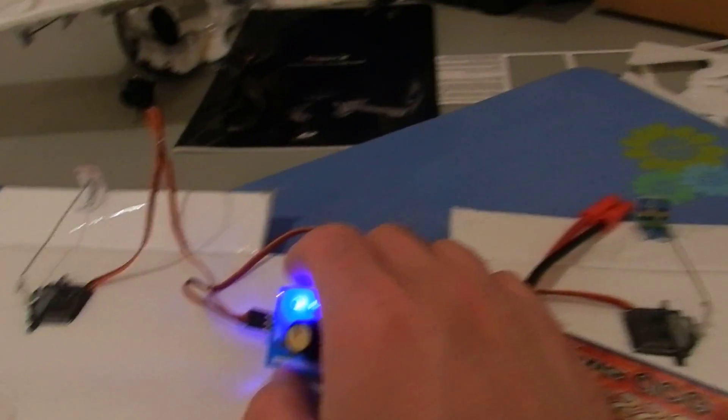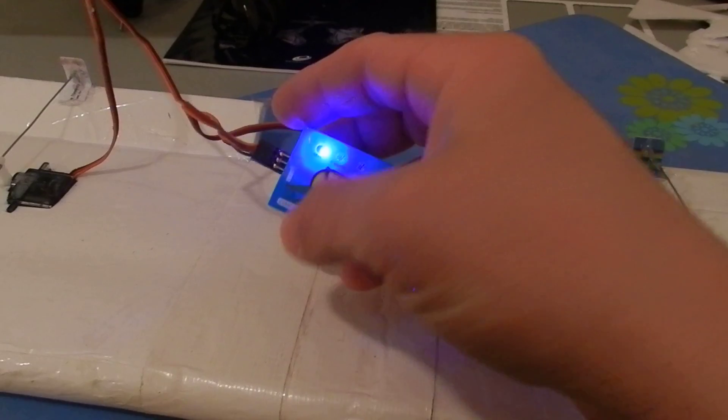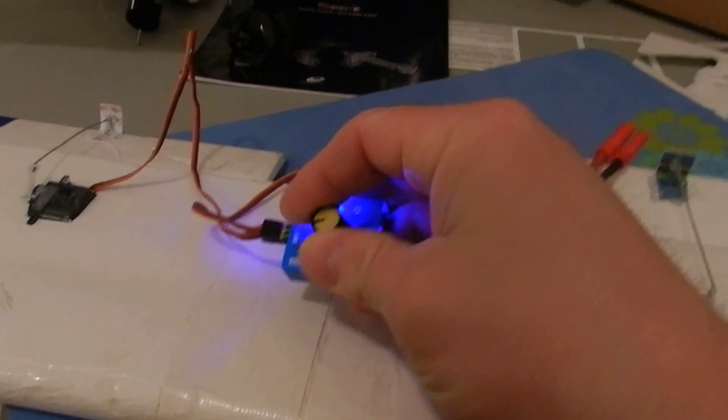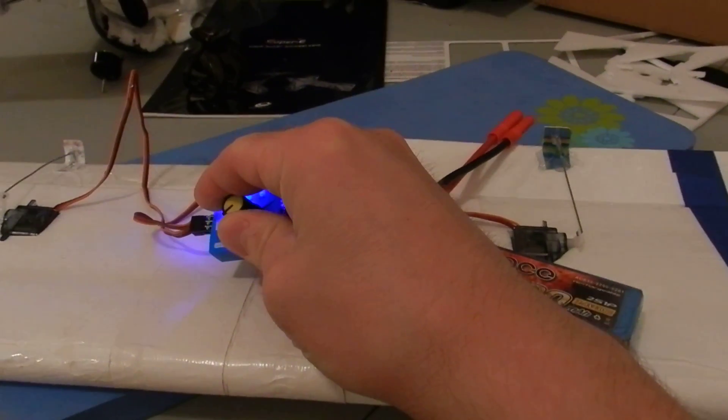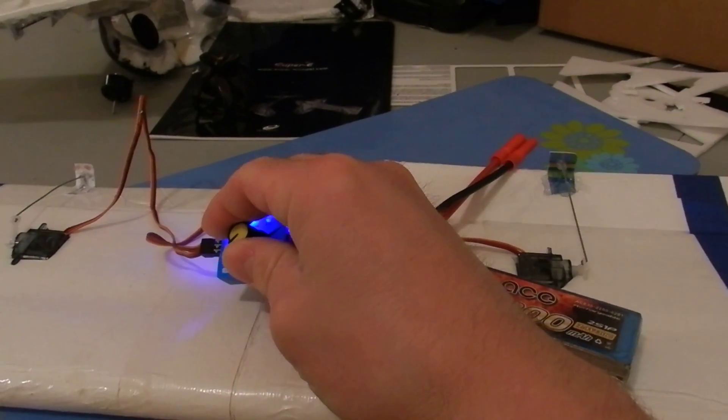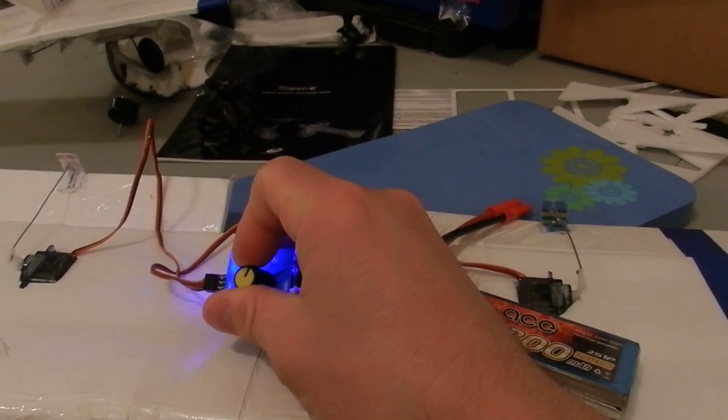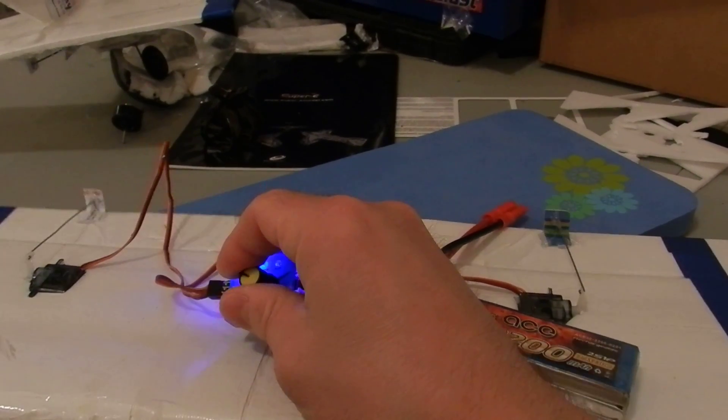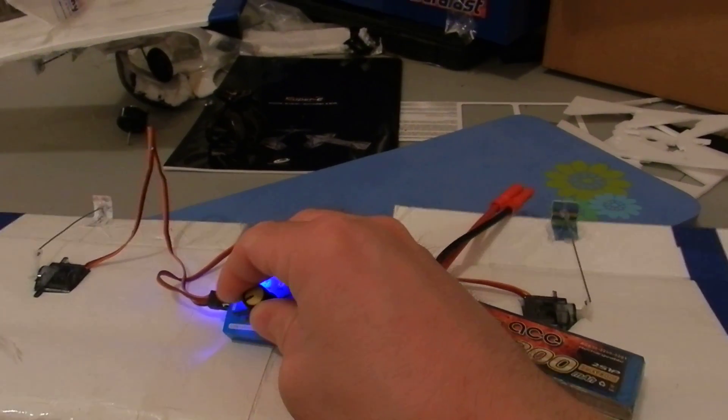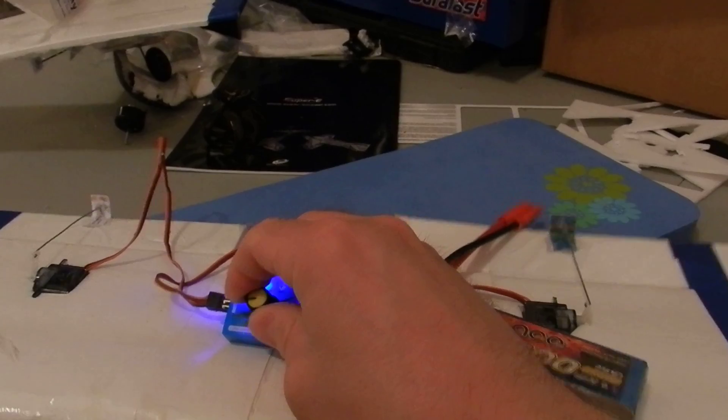And the really neat thing about this servo tester is it has three different modes. Right now, it's in what we call manual mode. So as you see, as I turn the wheel here on the servo tester, my servos respond.